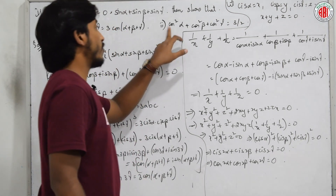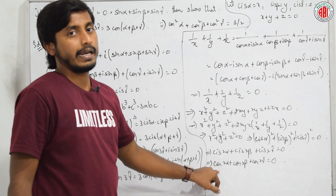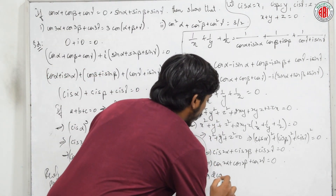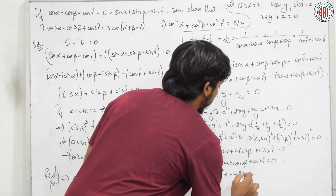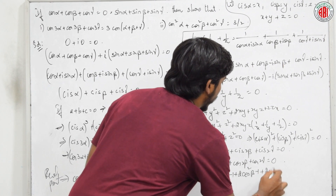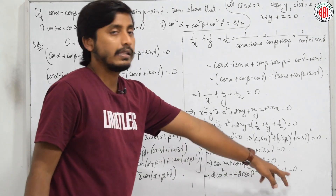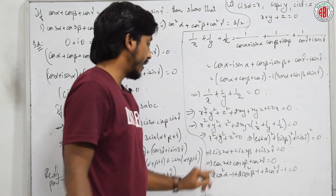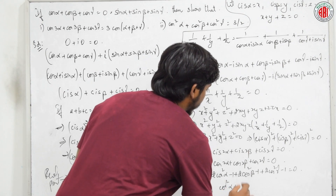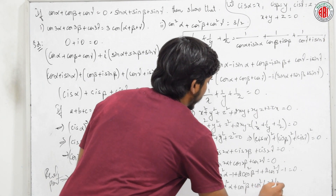He asks us to prove cos²α + cos²β + cos²γ = 3/2. Using cos(2α) = 2cos²α − 1, we write (2cos²α − 1) + (2cos²β − 1) + (2cos²γ − 1) = 0. There are three minus-ones giving −3. Taking 2 common and rearranging: cos²α + cos²β + cos²γ = 3/2.